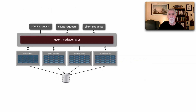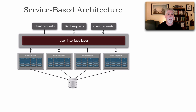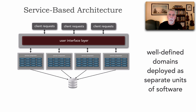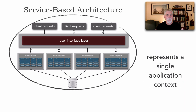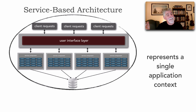Let's start with service-based architecture. This architecture style is really a hybrid of microservices. The shape of this involves well-defined domains — portions of the application deployed as separate units of software — so it is still a distributed architecture. One of the main differences between service-based architecture and SOA is that service-based architecture really represents just a single application scope, whereas SOA is more of an enterprise scope, integrating other systems together.